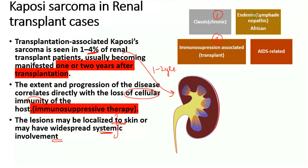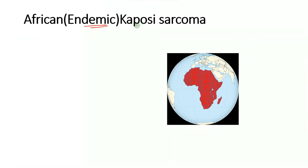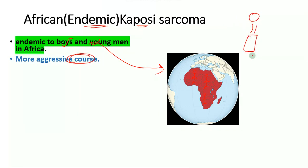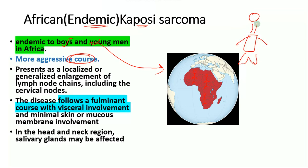The endemic Kaposi's sarcoma is endemic to boys and young men in Africa and has a more aggressive course. Initially it presents as localized or generalized enlargement of the lymph nodes, especially the cervical lymph nodes, and from here it can follow a fulminant course with visceral involvement. Skin or mucous membrane involvement is not always present — in many cases it can be minimal. This form is more aggressive compared to other forms of Kaposi's sarcoma.